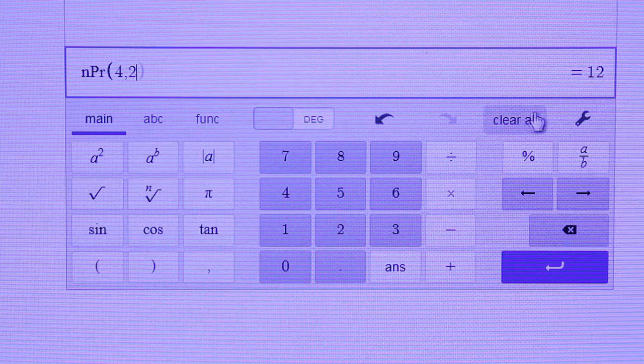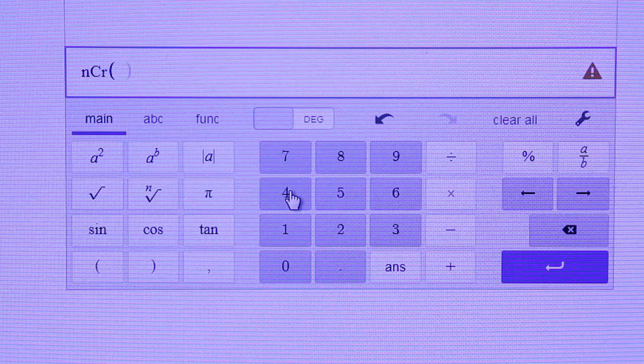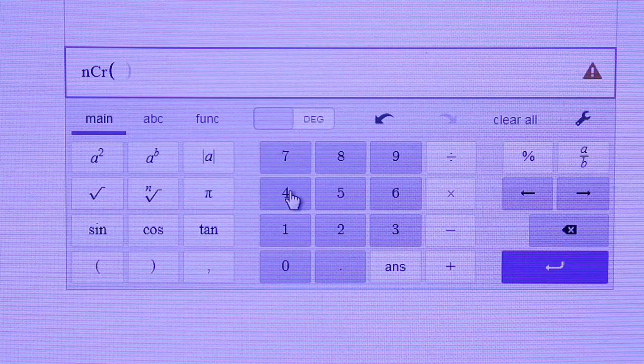Now what we want to do is a combination. So, if you wanted to, you could clear all that. Go back to function. Go to NCR. And again, same thing. We're going to go back to main. Out of 4 objects, we're choosing 2. And then comma and then 2. And you can see the answer is 6 right there. So, there you have it. How to evaluate permutations and combinations.